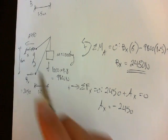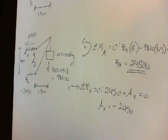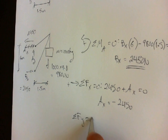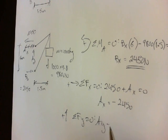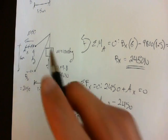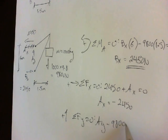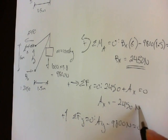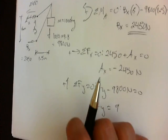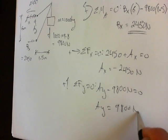And to find AY, just sum the forces in the Y direction. So sum forces in Y equals zero. Going up is positive. So AY minus, this force is going down, 9,800 newtons equals zero. Therefore AY equals 9,800 newtons.